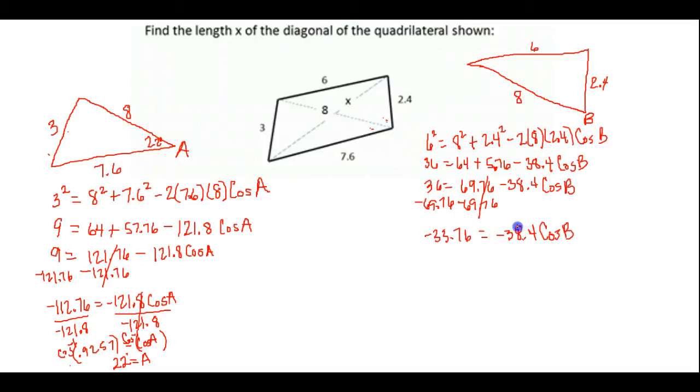Gives me negative 33.76 is equal to negative 38.4 times the cosine of B. Next, this negative 38.4, I'm going to divide both sides by that value, so that I have cosine of B by itself. So negative 33.76 divided by negative 38.4 gives me approximately 0.8791, but again, leave that value in your calculator for this next step, because to remove a cosine, we do the opposite, which is the inverse cosine.